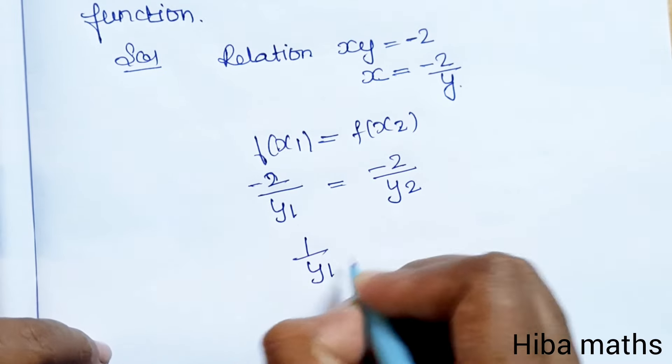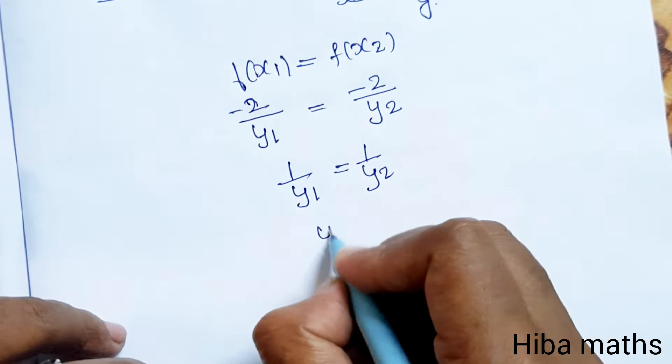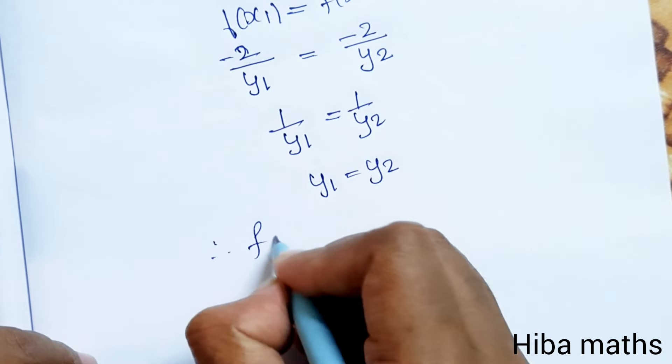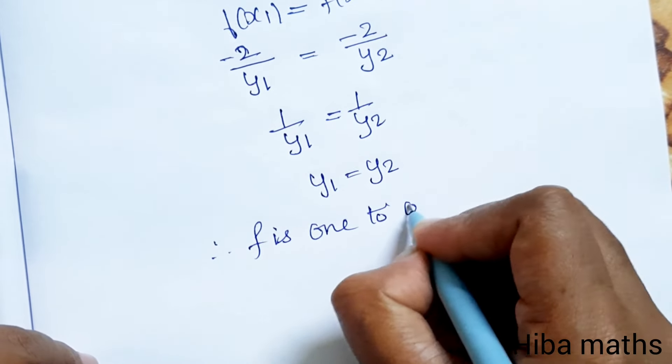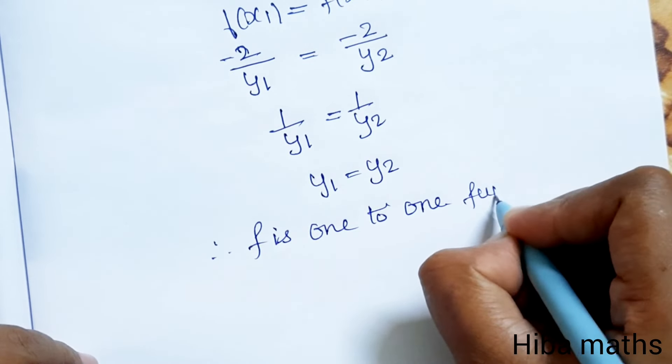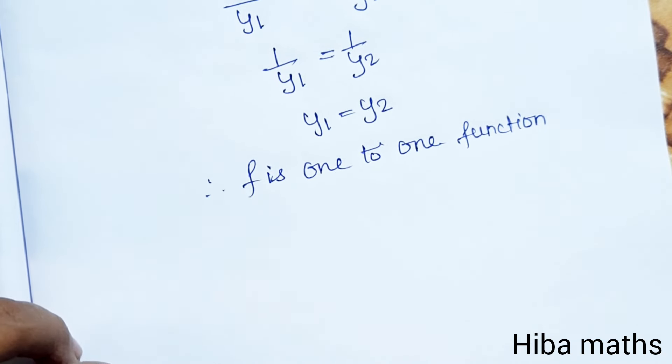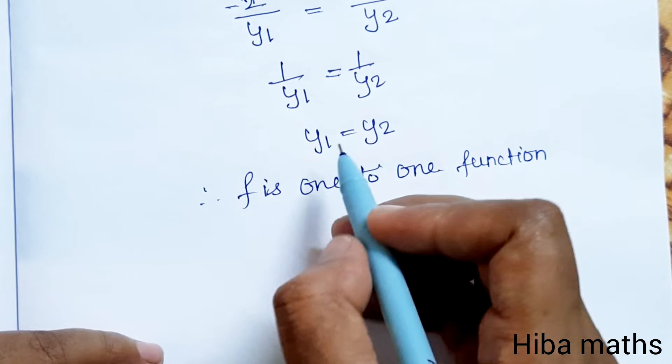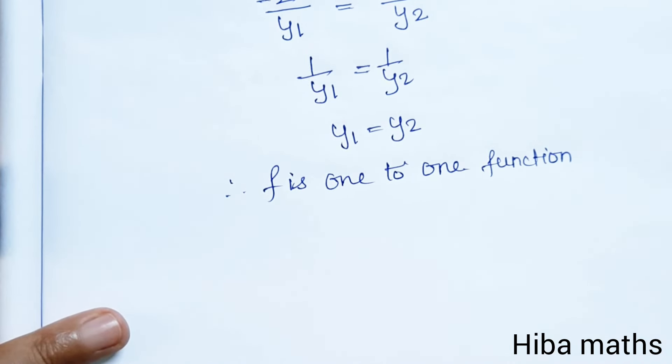Therefore, y1 equals y2, which proves that f is a one-to-one function. Now, for the domain, except for 0, all real numbers are possible.